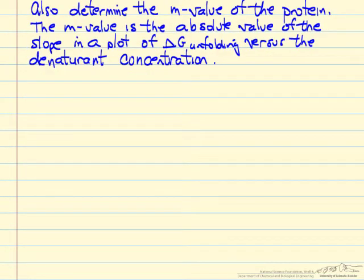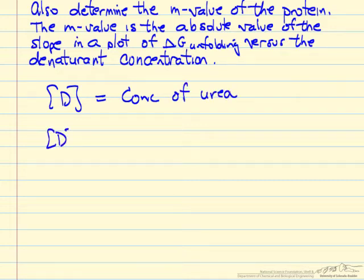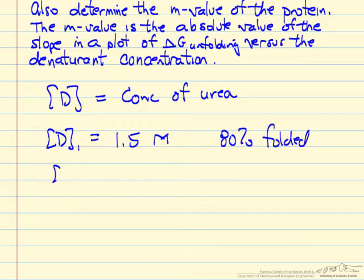So we're going to use a notation which will indicate this denaturant and its concentration. We have the condition where the concentration is 1.5 molar, then it's 80% folded, and when the concentration is 4 molar, then it's only 35% folded.